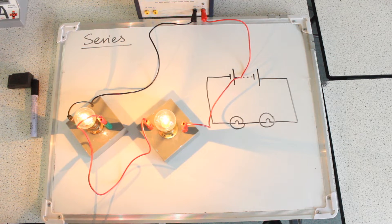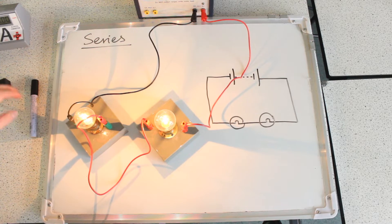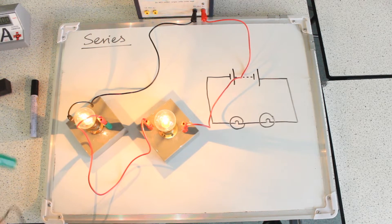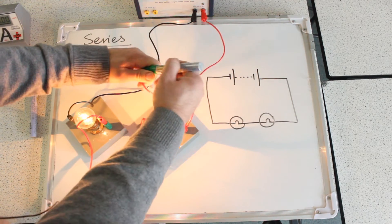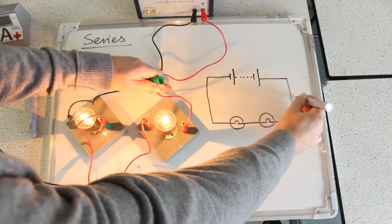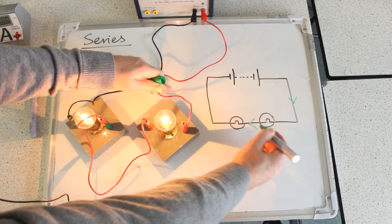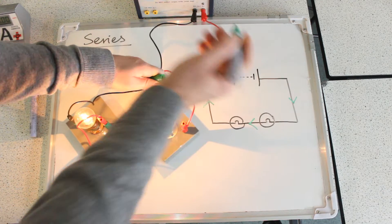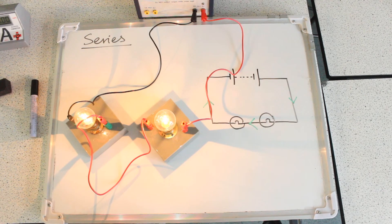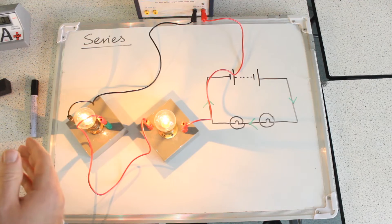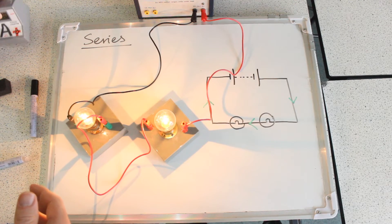First thing I'm going to do is use my ammeters to measure the current at three different places. I'm going to measure the current out of the power pack here on the positive side, the current in between the two bulbs, and the current across here on the negative side. Now have a little predict of what sizes you think those currents will be compared to one another.